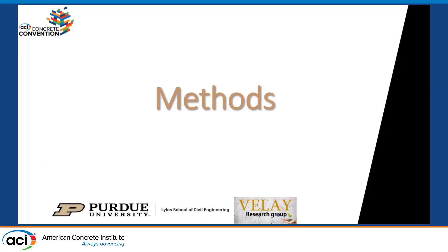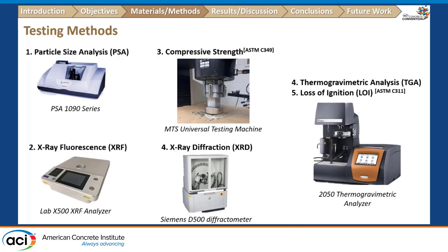For testing methods, we performed a particle size analysis on the sugarcane ash, X-ray fluorescence (XRF) to examine the chemical composition, and compressive strength testing for mechanical properties. We also performed X-ray diffraction (XRD) for better material characterization, as well as thermogravimetric analysis (TGA) and loss on ignition (LOI).